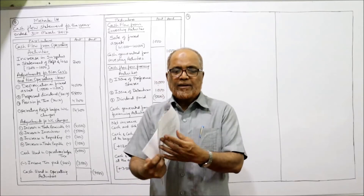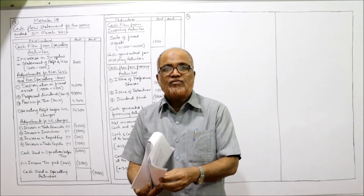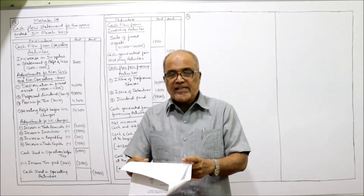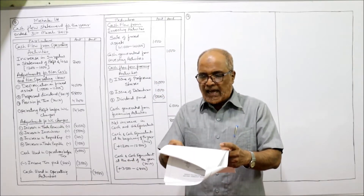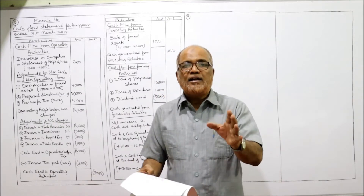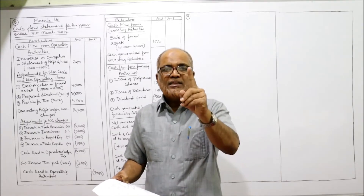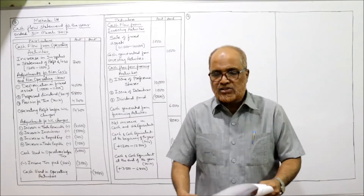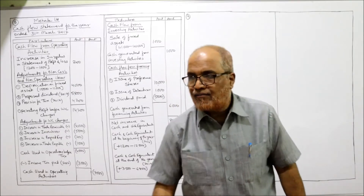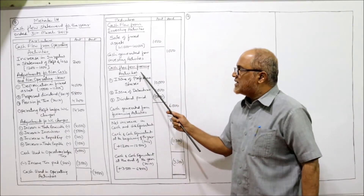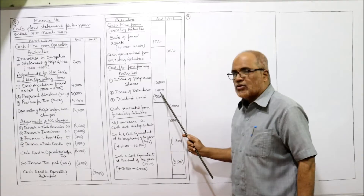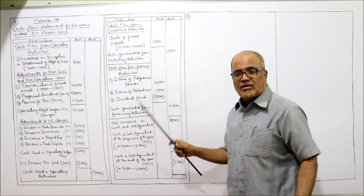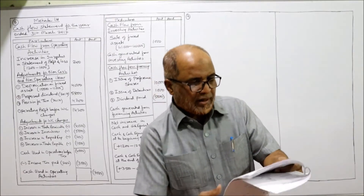Next item: debentures. Last year 6,000, current year 7,000 — debentures increased by 1,000. So issue of debentures will be taken in financing activity — issue of debentures 1,000. Issue of preference shares 10,000 also goes in financing activity.